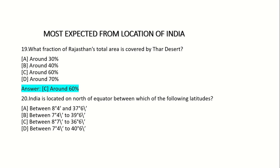20th question: India is located north of the equator between which of the following latitudes? Option A: Between 8 degrees 4 minutes and 37 degrees 6 minutes. Option B: Between 7 degrees 4 minutes and 39 degrees 6 minutes. Option C: Between 8 degrees 7 minutes and 36 degrees 6 minutes. Option D: Between 7 degrees 4 minutes and 40 degrees 6 minutes. Answer: Option A — Between 8 degrees 4 minutes and 37 degrees 6 minutes.